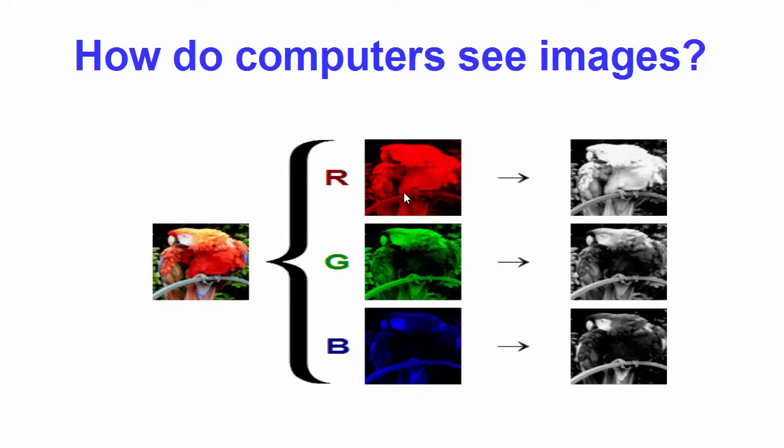Your standard digital camera has three channels — red, green, and blue. We will learn more about images and how we can process them using OpenCV in the later videos.